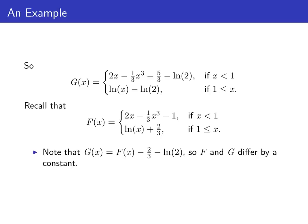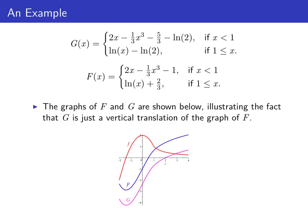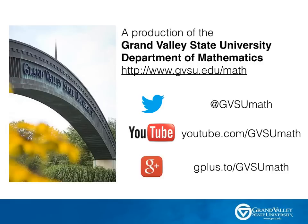Notice that G of x and F of x differ by a constant — specifically 2 thirds plus ln 2 — for both pieces. So G of x equals big F of x minus 2 thirds minus ln 2, and F and G just differ by a constant. Drawing the graphs of big F in blue and big G in magenta, we can see that big G is just a vertical translation of big F, illustrating that any two antiderivatives of the same function differ by a constant. That concludes this edition of the GVSU screencasts.